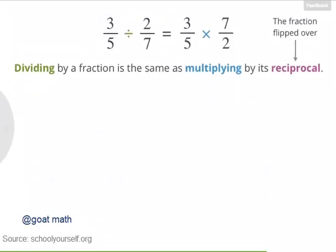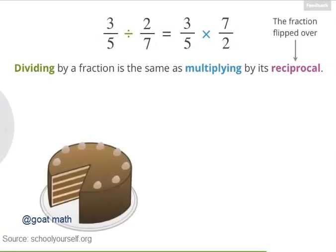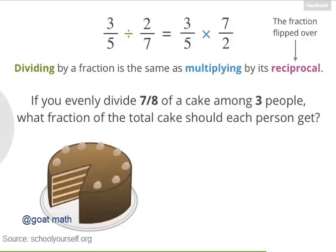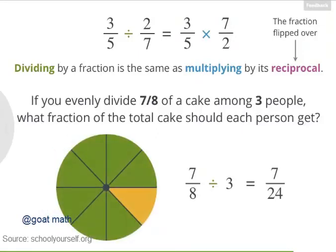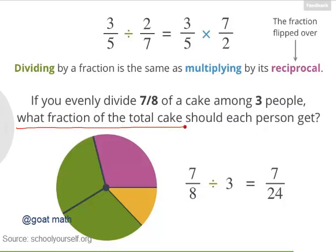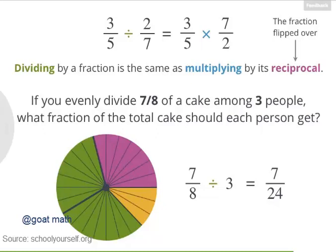So now let's see some real world examples of dividing fractions. Suppose you have 7 eighths of a delicious chocolate cake, and you want to divide what's left of this cake evenly among 3 people. So what fraction of the total cake does each person get? Excellent work! So what we're really asking here is what you get when you divide 7 eighths by 3. And you found this was 7 twenty-fourths. Here's the fraction 7 eighths, and here's how we would divide 7 eighths into 3 equal parts. This purple region here represents 1 third of the green region.